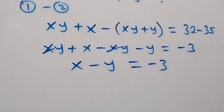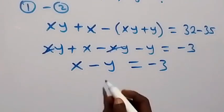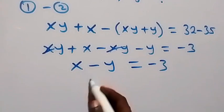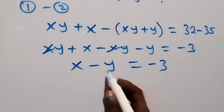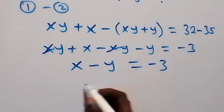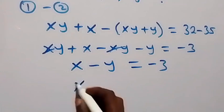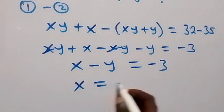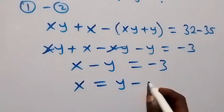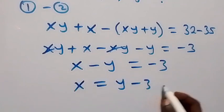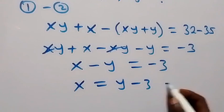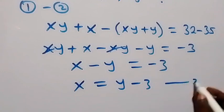We are left with x minus y, which equals to minus 3. From here, we can make x the subject: x equals y minus 3. Label this as equation 3.